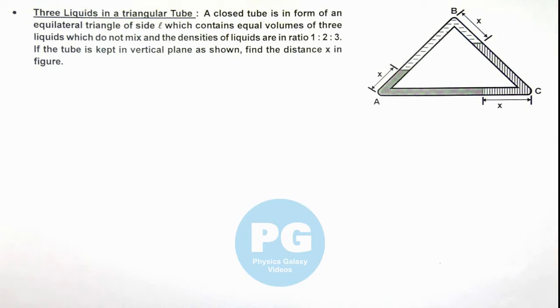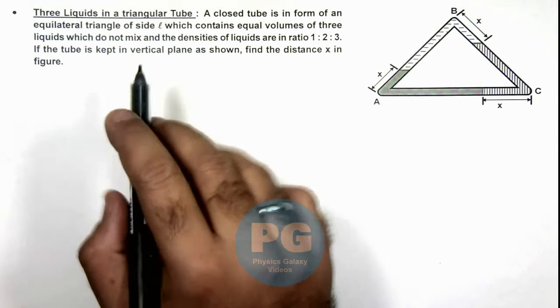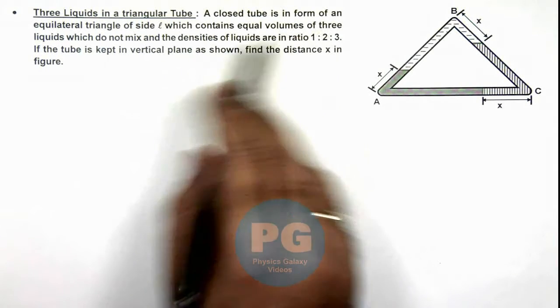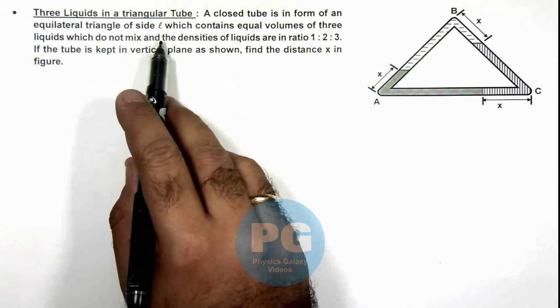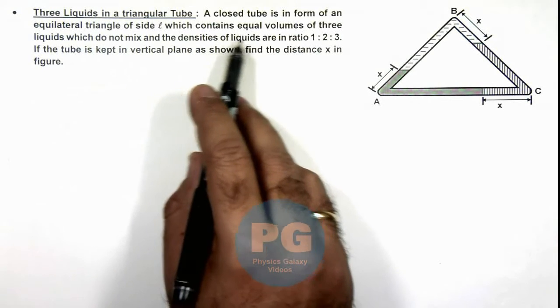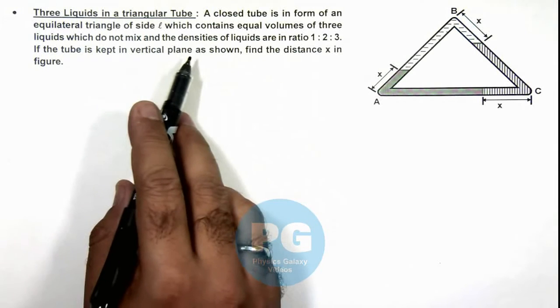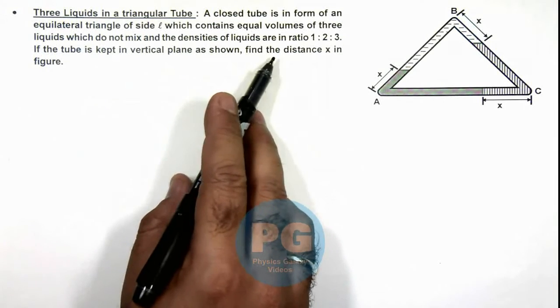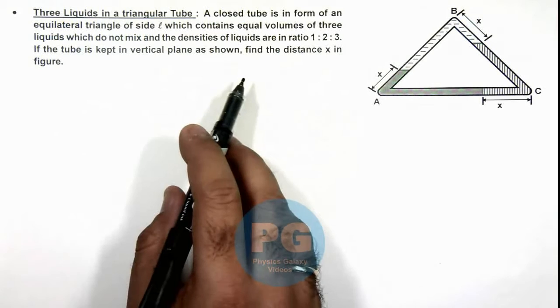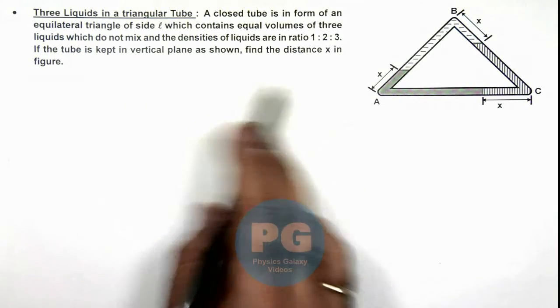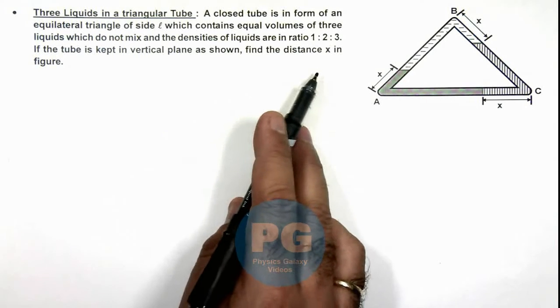In this illustration, we'll analyze three liquids in a triangular tube. We are given that a closed tube is in the form of an equilateral triangle of side l which contains equal volumes of three liquids which do not mix, and the densities of liquids are in the ratio 1:2:3. The tube is kept in a vertical plane as shown. We are required to find the distance x in the figure.